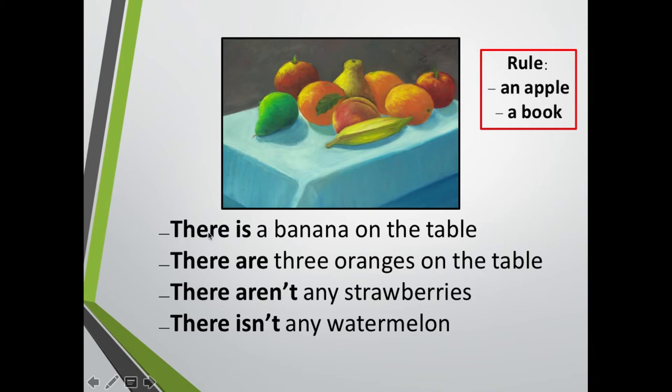Pero esta vez tres naranjas sobre la mesa. Mismo significado, ¿cierto? Hay. Pero esta vez hablamos en plural. Por lo tanto, utilizamos are. There are. Then we can say, there aren't any strawberries. No hay. Porque tenemos la comita con la T. ¿Cierto? N comita T.